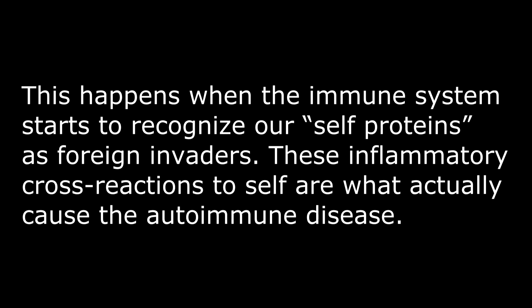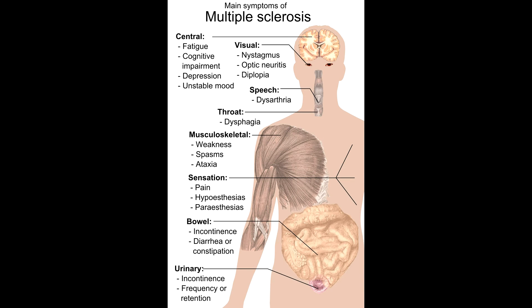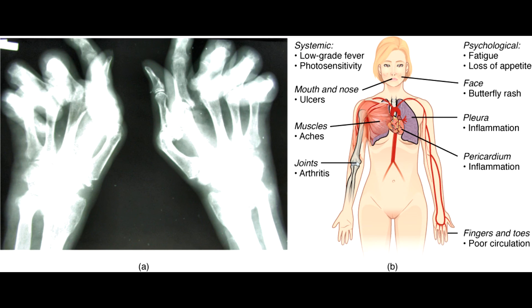For example, in MS the body sees human myelin basic protein as a danger, and in rheumatoid arthritis the body sees the joint tissue as a danger.